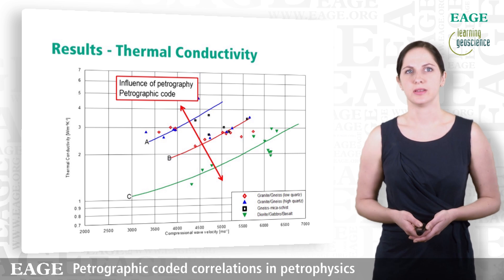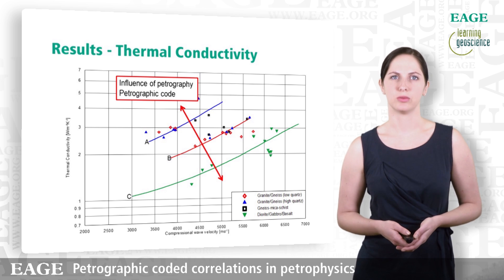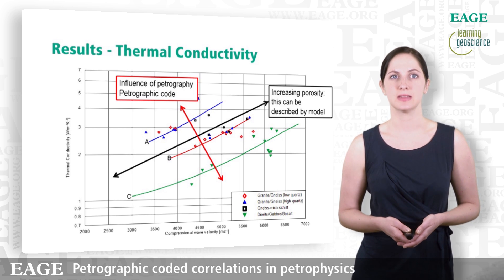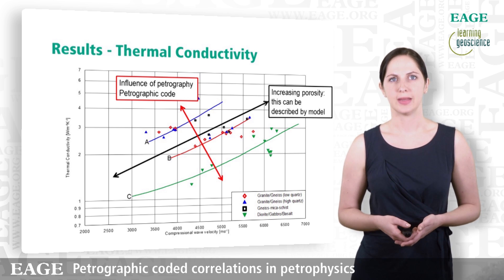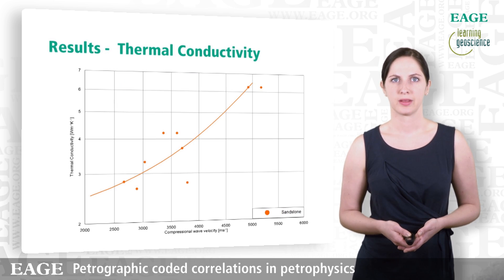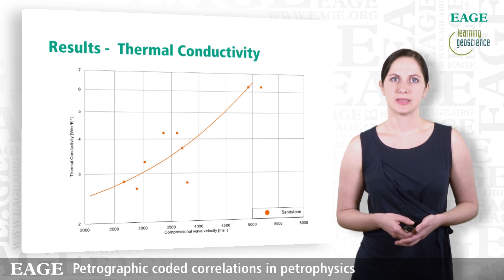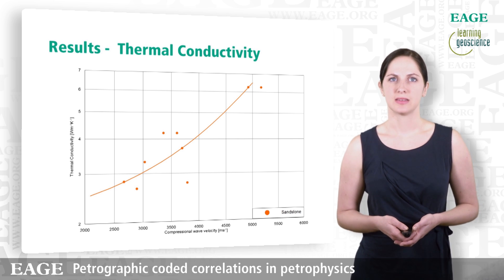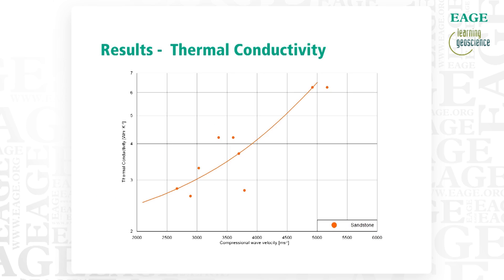The arrow indicates the petrographic coded influence — we have a different petrographic code for the three correlation lines. The black line shows the increase of porosity, so on the right-hand side you see the solid host material with no porosity, and along the arrow porosity increases. The same plot is now presented for sandstone: thermal conductivity versus compressional wave velocity. Sandstone shows a higher thermal conductivity, and again you see the dots with the measured data and the line is the correlation line calculated from the inclusions model.